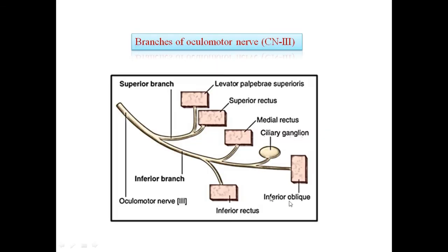The oculomotor nerve supplies five muscles: levator palpebrae superioris, superior rectus, medial rectus, inferior oblique, and inferior rectus — all extraocular muscles except the lateral rectus and superior oblique.